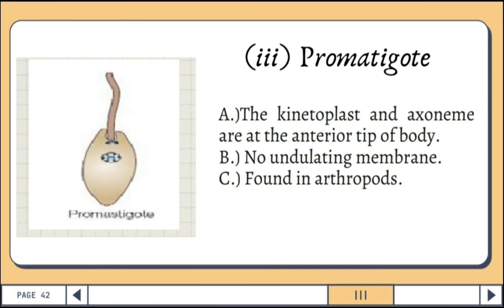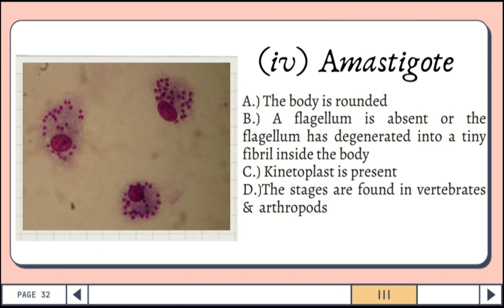The promastigote has the kinetoplast and axoneme at the anterior tip of the body with no undulating membrane, and it is mostly found in arthropods. Lastly is the amastigote: the body is rounded, the flagellum is absent or has degenerated into a tiny fibril inside the body. The kinetoplast is present, and these stages are found in both vertebrates and arthropods.